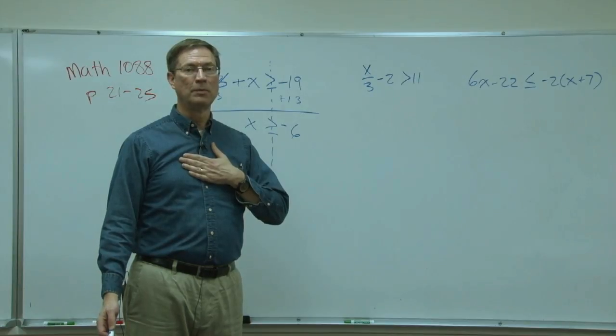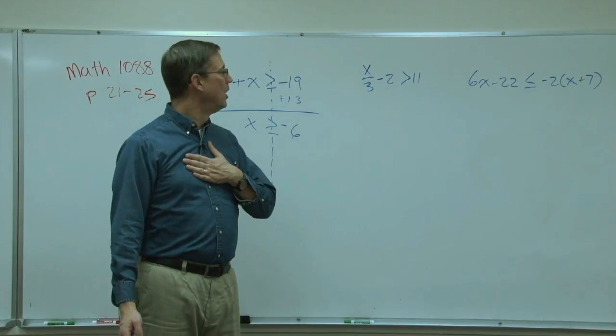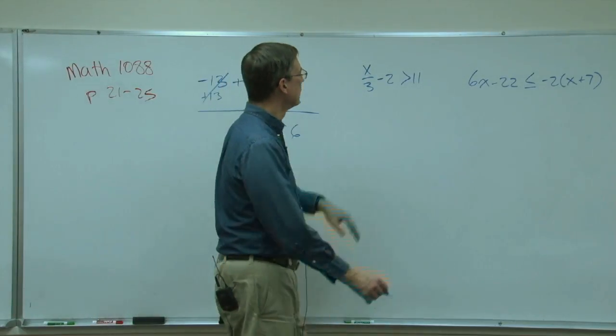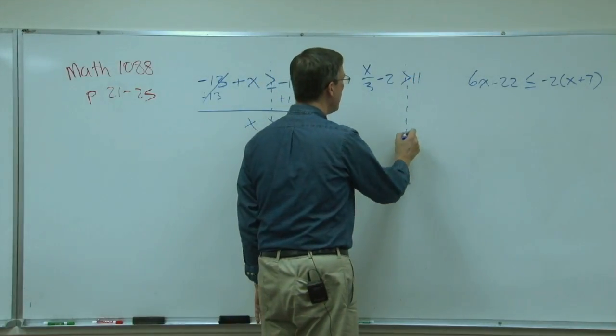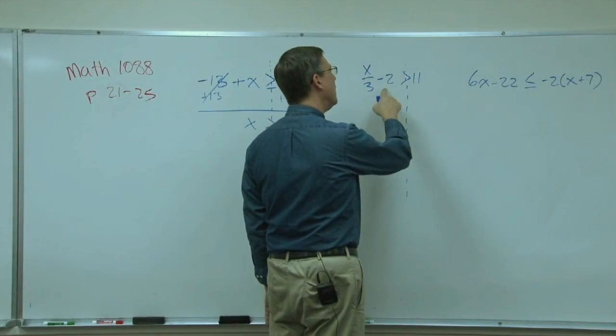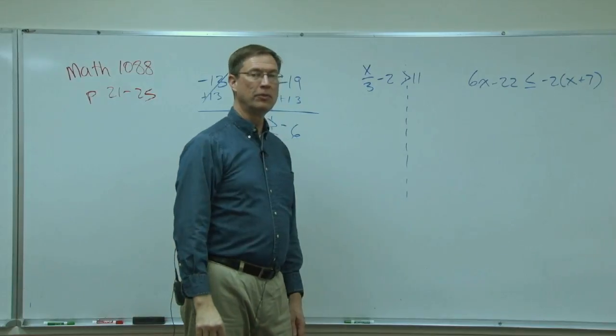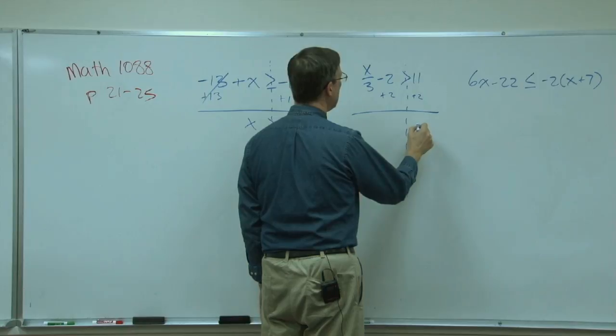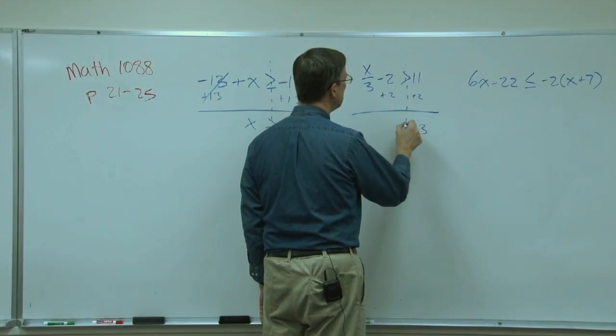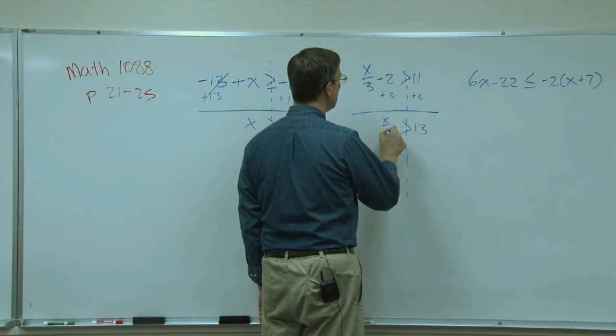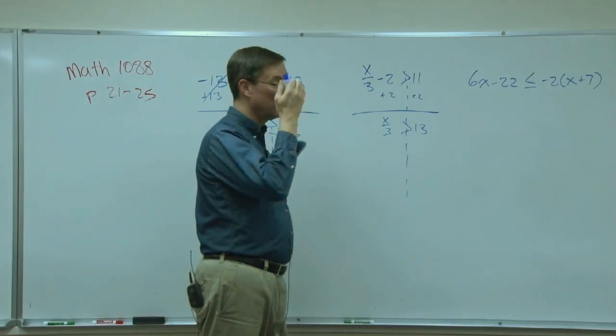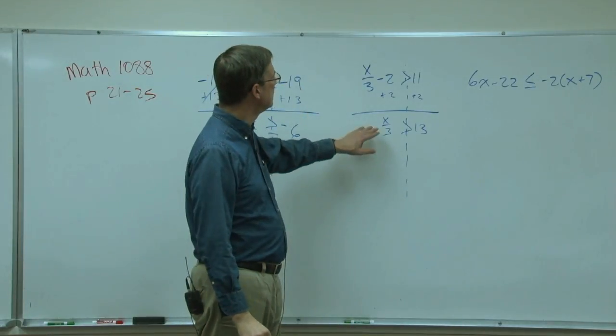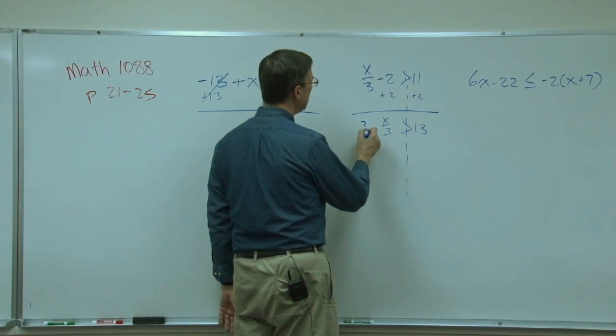Alright, let's talk about this one. Dotted line. We're going to undo the subtraction first, so we'll add 2 to both sides and get 13. And then over here x over 3. I'm not going to finish this one for you, but you can see that the last step would be to multiply both sides by three.